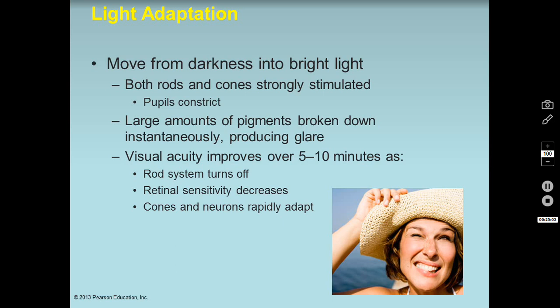When moving from a really dark room to a really bright room, both the rods and cones are strongly stimulated — your pupils constrict, you're squinting, there's too much light. Think about turning the lights on when you wake up in the morning. The light causes the breakdown of that pigment all at once — that's why we get glare and can't see right away. Our rods and cones are just overloaded, with too much pigment breaking down. But after five to ten minutes, vision gets better — the rods kind of turn themselves off because it's too bright, and retinol sensitivity decreases.